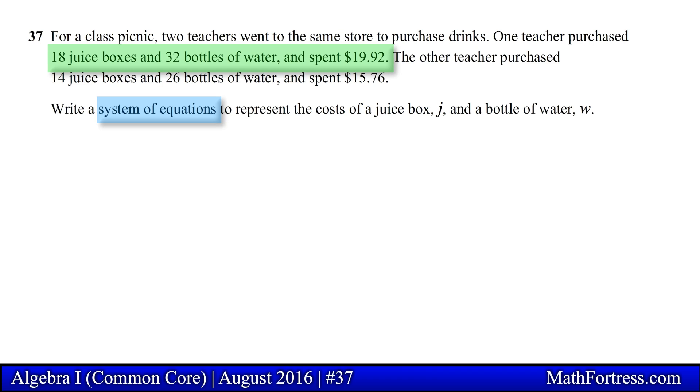We know from the problem that the first teacher bought 18 juice boxes and 32 bottles of water. The teacher ended up paying a total of $19.92. So if we take the number of each item bought and multiply each item with their respective price, it should equal $19.92. A second teacher also purchased 14 juice boxes and 26 bottles of water and spent $15.76.